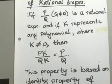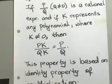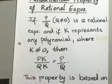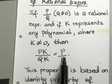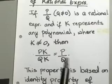...then if you take your rational expression p over q and multiply your numerator and your denominator by this polynomial k, it is still equal to p over q.